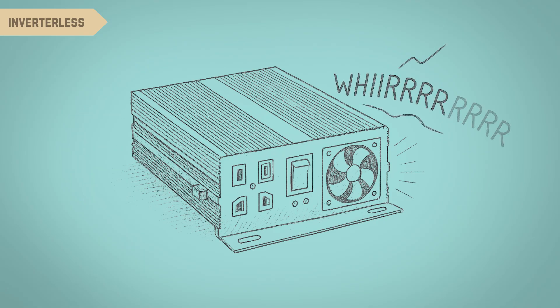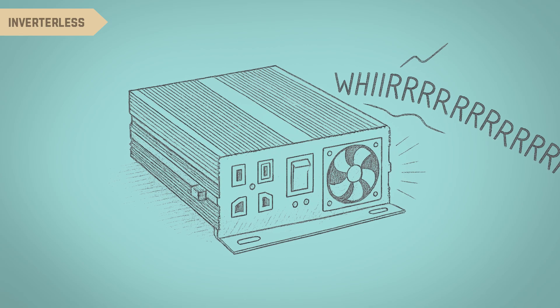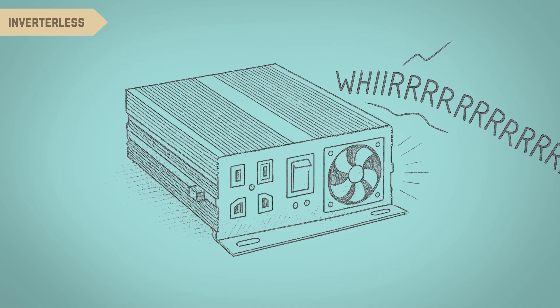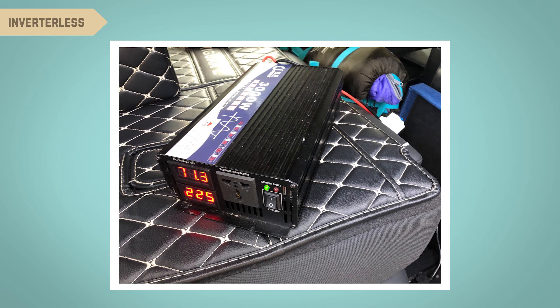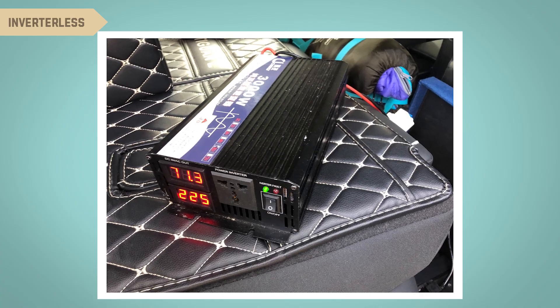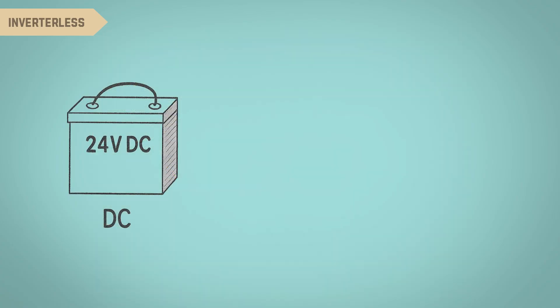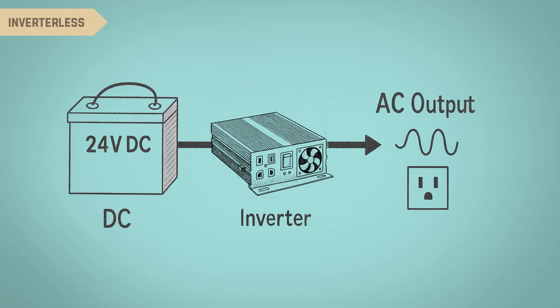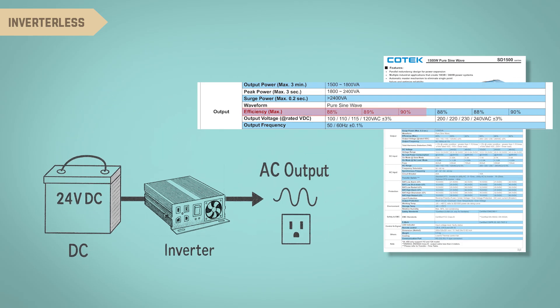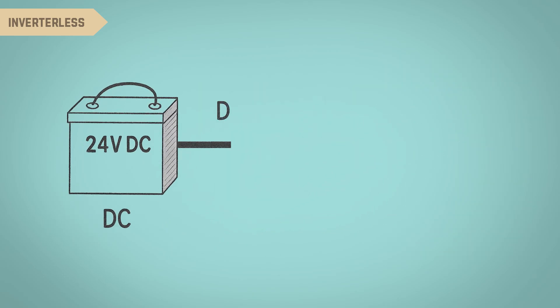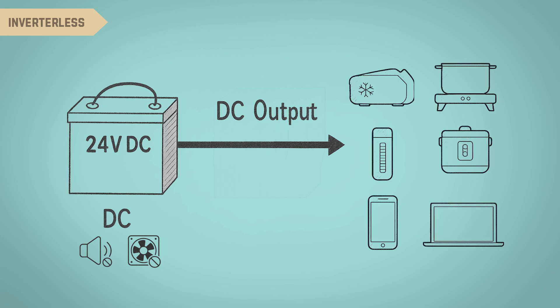Inverters also produce noticeable fan noise when operating, which becomes especially annoying at night or in quiet environments, disturbing rest and peace inside the van. Worse still, inverters generate significant heat and require extra space for cooling. And converting DC to AC involves energy loss, typically with an efficiency of only 85-90%, meaning 10-15% of the energy is lost during conversion. That's why I chose to eliminate the inverter altogether and design a pure DC-powered system.